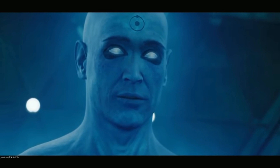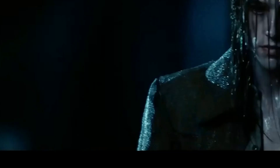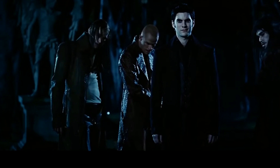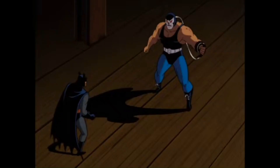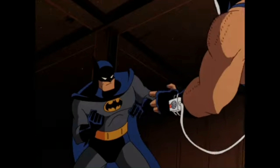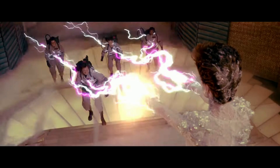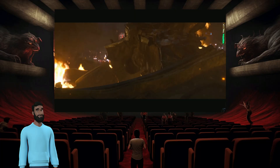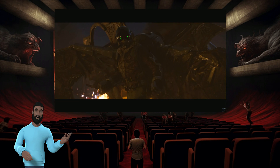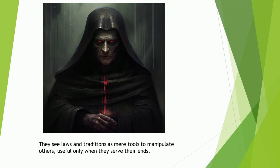Neutral characters are comfortable bending or breaking rules when they believe the benefits outweigh the risks. On the other hand, evil characters are often unflinching in their willingness to cause harm and misery. They lack remorse, and their motivations could stem from a number of sources, like an evil deity, a malevolent master, or a personal affinity for causing pain. Combine these two, and you have neutral evil alignment characters who are ultimately out for themselves, using any means necessary to achieve their goals. They see laws and traditions as mere tools to manipulate others, useful only when they serve their ends. The moment these rules hinder them, they won't hesitate to break them.